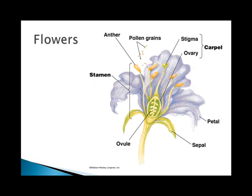Flowers are the reproductive structures of angiosperms, and they hold the gametophyte stage. A flower has four sets of modified leaves: the sepals, which are often green to protect the flower; the petals, that often have bright colors; the stamens, which are the male gametophytes that develop in stamen sporangia as pollen grains; and the carpals, which are the female gametophytes that develop in carpal sporangia as embryo sacs in the base of the carpal.